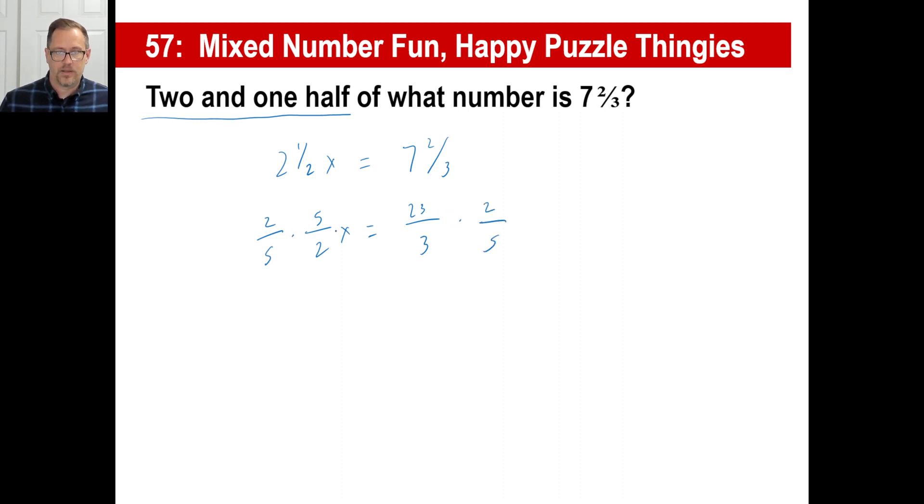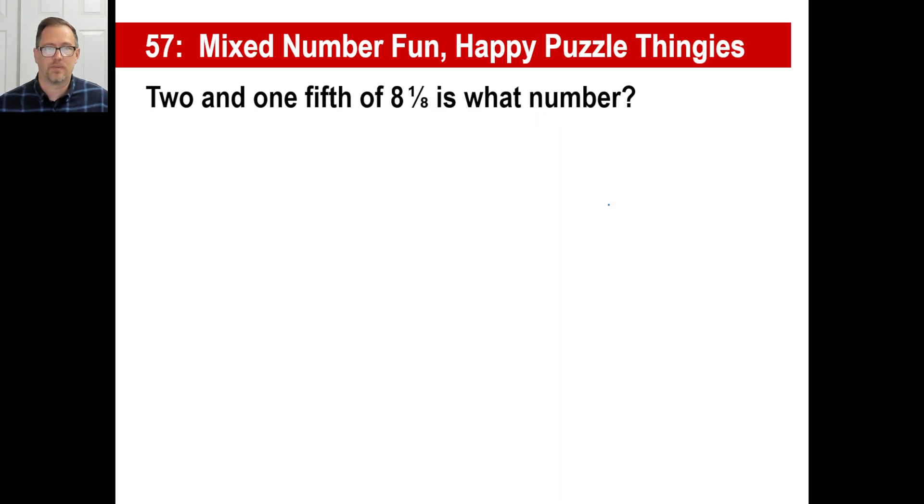Let's fix it up. Five-halves X equals three times seven is 21 plus two is 23 thirds. And we'll do the old reciprocal. And that goes away. I don't see any way to reduce that. So I got 46 up top and then 15 there. What's 46 divided by 15? Three and another little leftover. There's the answer.